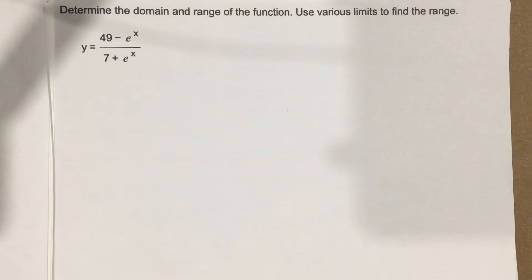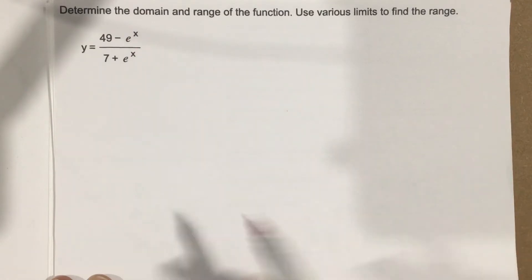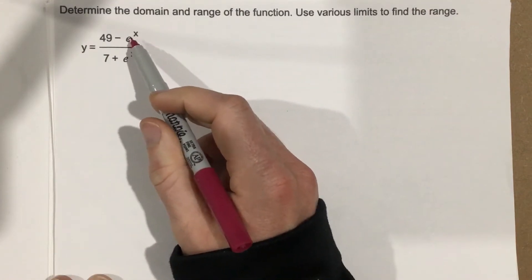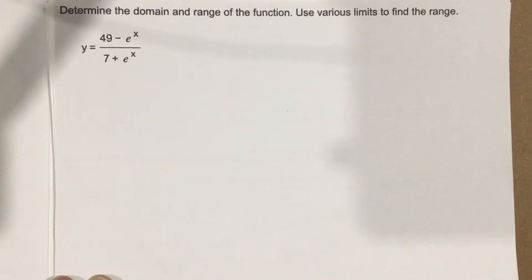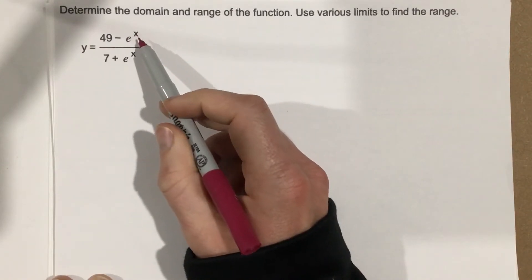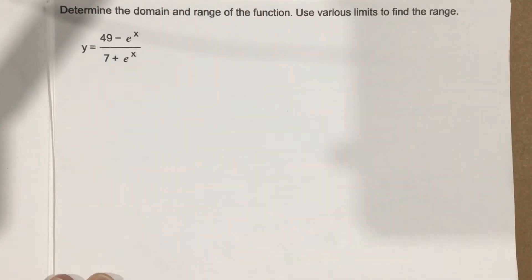So let's find the domain first. First of all, we have e to the x. Remember, e is just 2.71, it's just a constant number. They use the letter e to represent this number, but it's just a number, 2.71 to some value. So anytime you have some number to an exponent, remember you can have that exponent be any number.